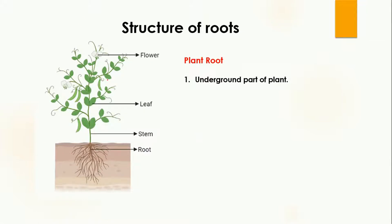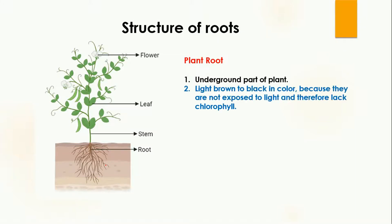In this diagram you can see a plant which has flowers, a green leaf, and these flowers and leaf are attached to the stem, which is the outer part of the plant. The root is actually the underground part of the plant which is present inside the soil. The roots are light brown to black in color.